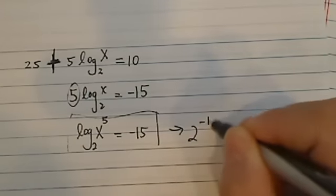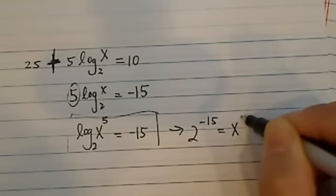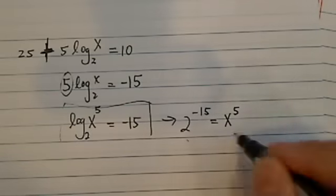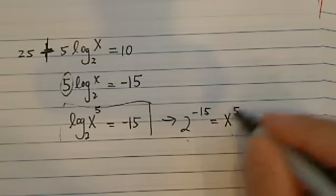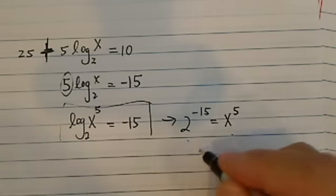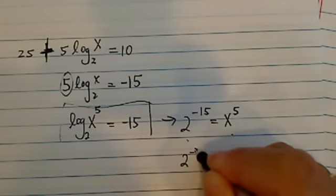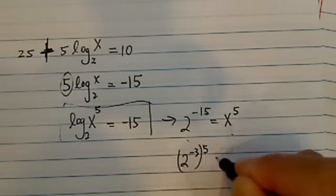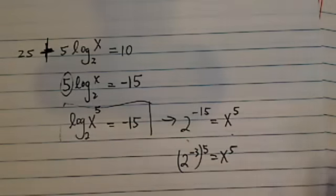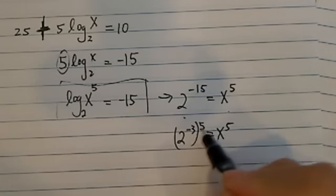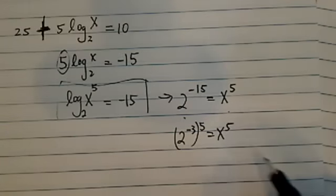Now this one is in the form we can deal with. 2 to the minus 15 is equal to x to the 5th. So we're trying to equate in the base. Now we've got to get the exponential the same here. So we have 2 to the minus 3 to the 5, that's equal to x to the 5.